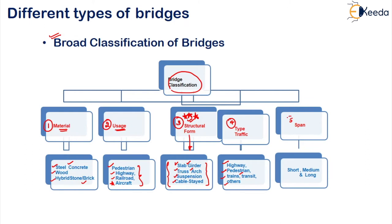The last and also important classification is based on span — whether it's a short span bridge, medium span bridge, long span bridge, or extra long span bridge. This is also an important classification. Basically, we will deal with the third and fifth types in detail — that is, based on structural form and based on span.